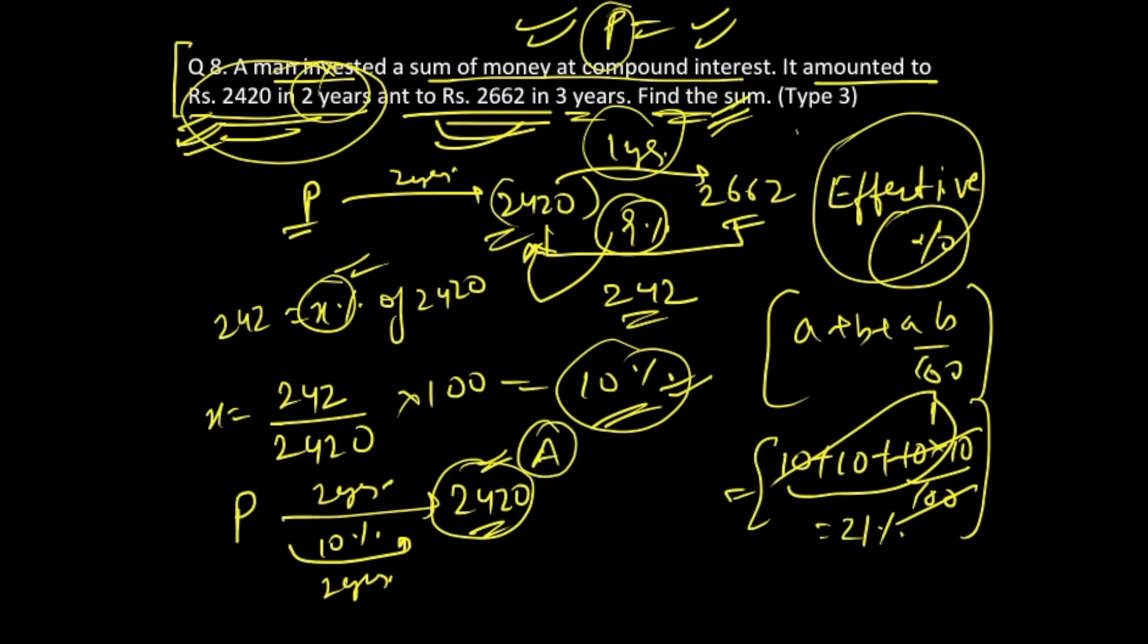Right. So now this sum 2420, which was your amount value after two years, it was principal plus interest. Principal, you know that is always 100 percent as per our assumption in the percentage method. Interest effective percentage is 21 percent. So if you apply or add these two, as you have done in one of the equations as well, this is 100 percent value, this is 21 percent value. Amount value is given to you.